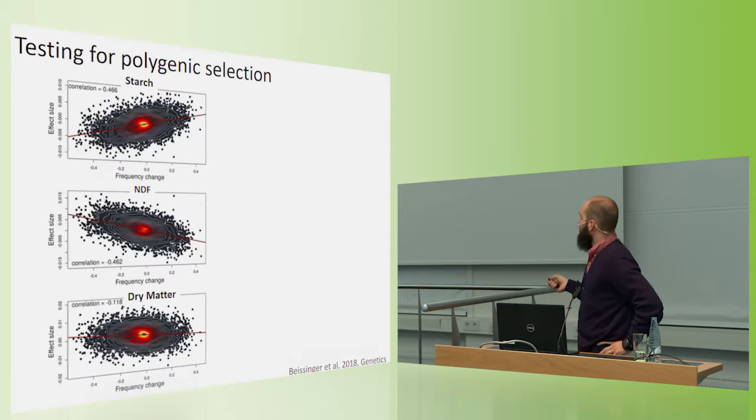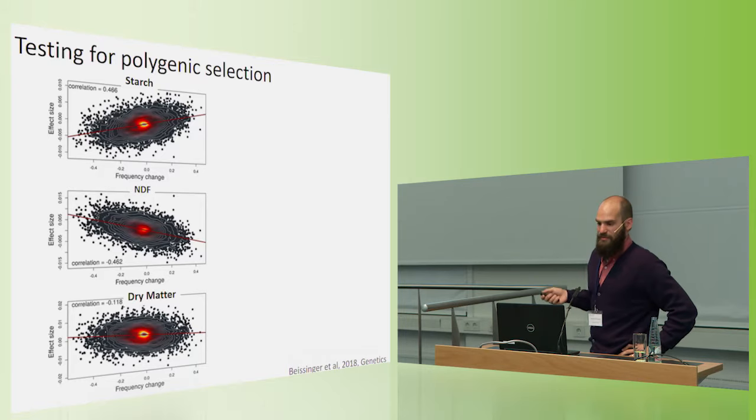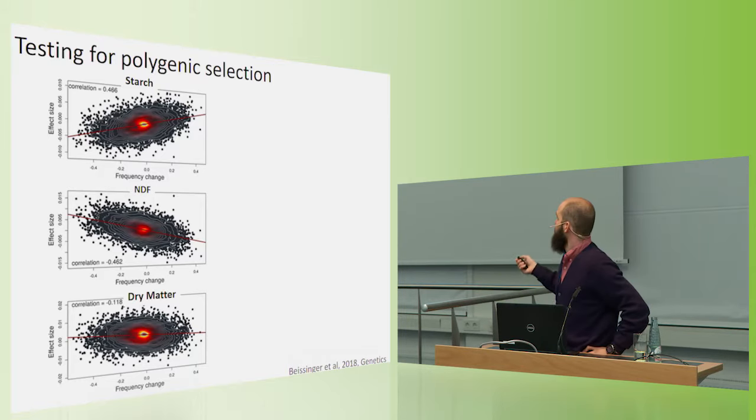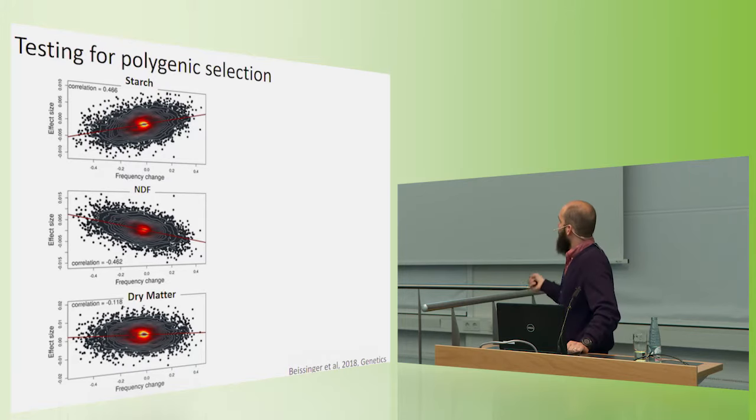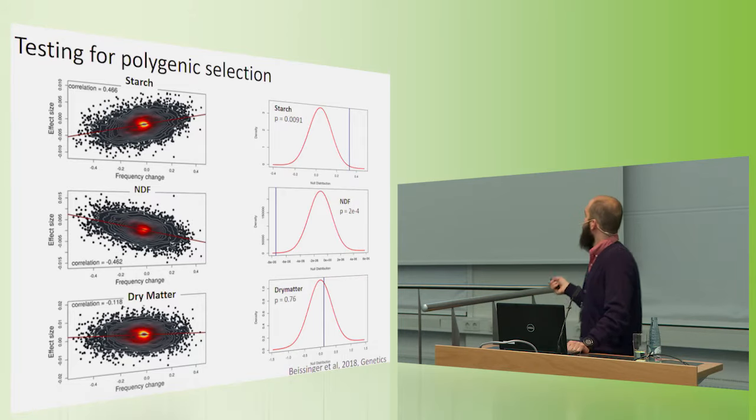So here's what we see in that WQS maize population I showed a minute ago. Before I show the test statistic results itself, I want to show just the strong correlations we observed between effect size on the Y axis and allele frequency change on the X axis for all of these traits. So for starch, there's a very significant positive correlation. For neutral detergent fiber, there's a very significant negative correlation. And for dry matter, which again we don't expect to have been under selection, there's a significant negative correlation.